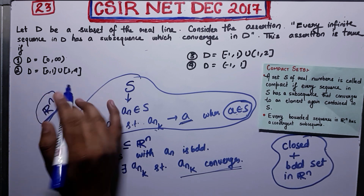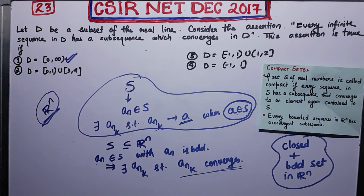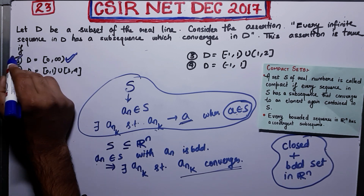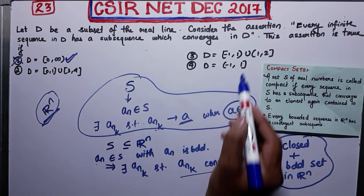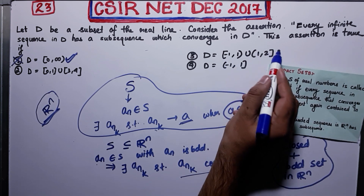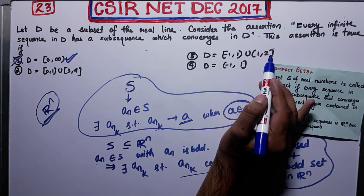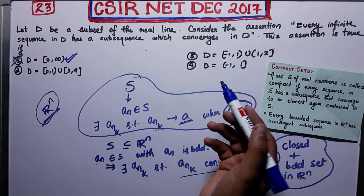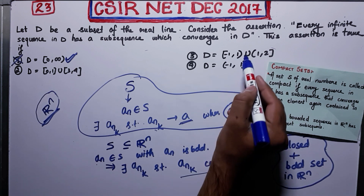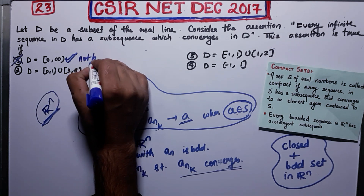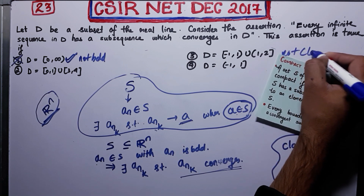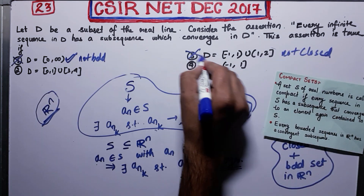Now see the first option — it is actually not a bounded set, so since it is not bounded it cannot be compact, because closed plus bounded implies compactness. For the third option, one is the limit point for that set but one does not belong to D, therefore it cannot be closed. So that one is not closed and therefore it cannot be compact.